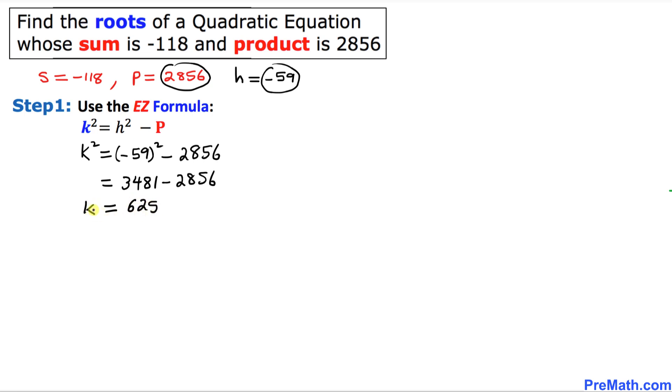So k square turns out to be 625, and we want to solve for k. So let's undo this square by taking the square root on both sides. As you can see, this square and square root they undo each other. So we ended up with k equal to positive or negative 25, and that is our k value.